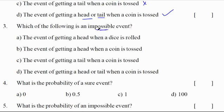Which of the following is an impossible event? Impossible event probability is 0. The event of getting a head when a dice is rolled - when dice is rolled, we can't get a head. The event of getting a head when a coin is tossed - yes, possible. Getting a tail - possible. Getting a head or tail - yes. But the impossible event is option A.